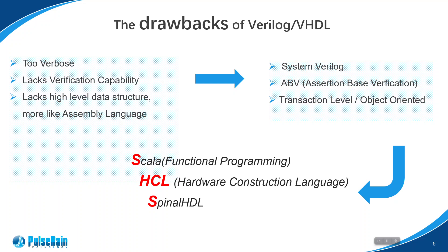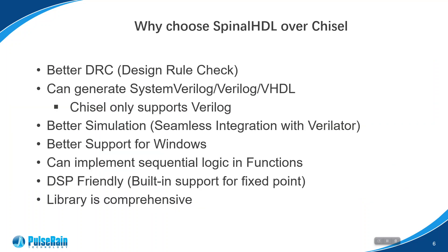To choose Spinal HDL over Chisel, Spinal HDL holds certain advantages. It has better DRC, it can generate multiple HDLs while Chisel can only support Verilog. Spinal HDL also has better simulation features and better support for Windows. It can implement sequential logic in functions, it's DSP-friendly, has built-in features for fixed point, and its library is comprehensive. That's why we ultimately chose Spinal HDL over Chisel.